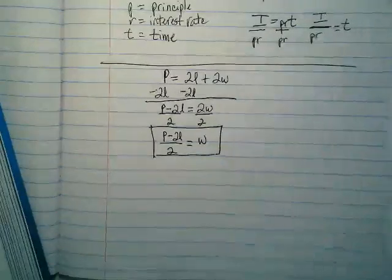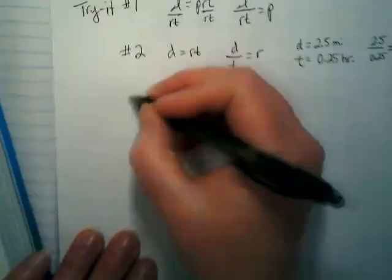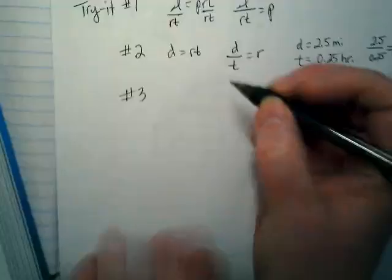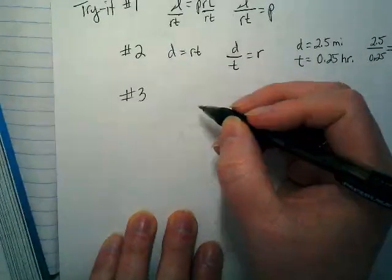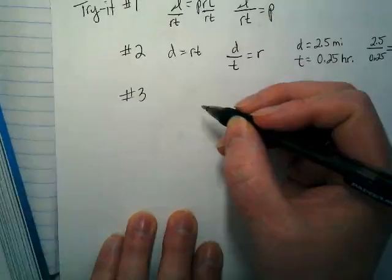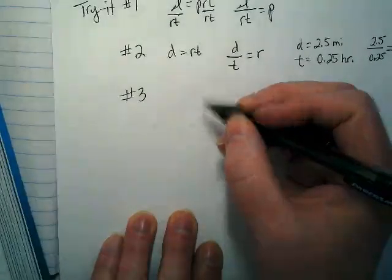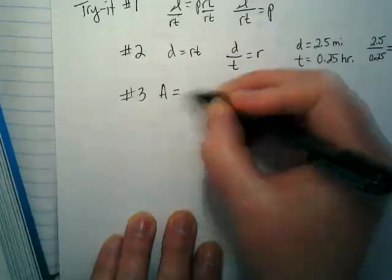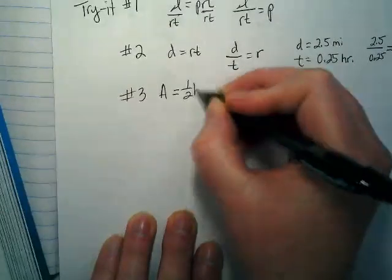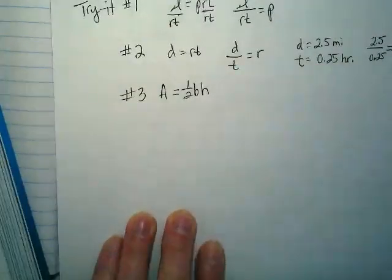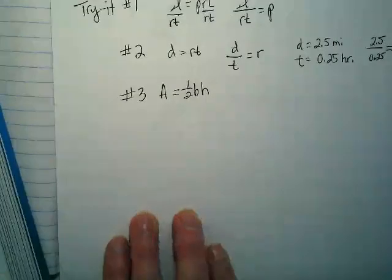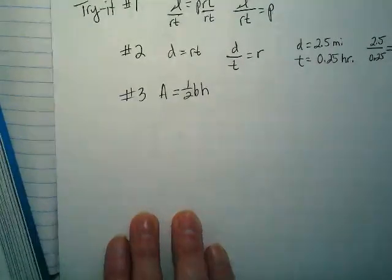Let's go back to our paper, and we're going to try number 3. It says, write the formula for the area of a triangle. Area equals 1 half base times height in terms of H. So it wants us to solve it for just the H.